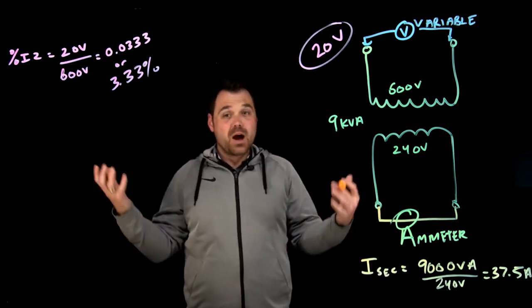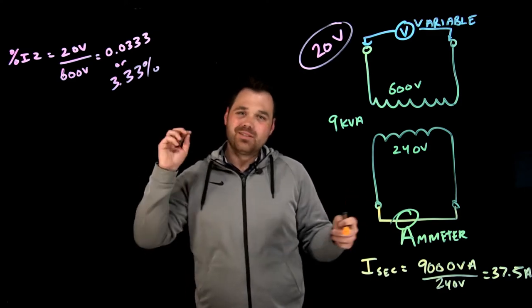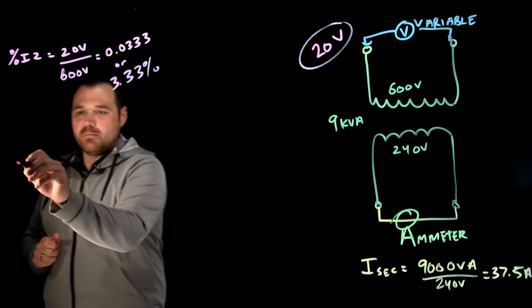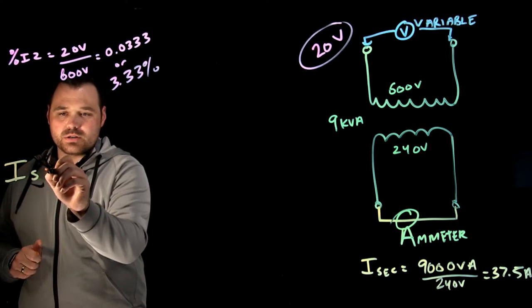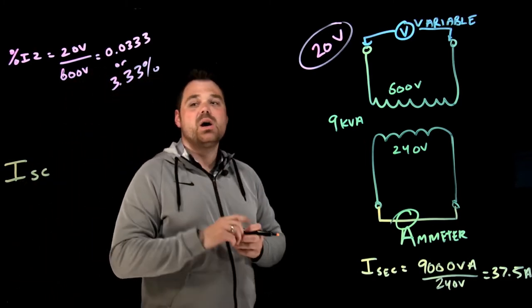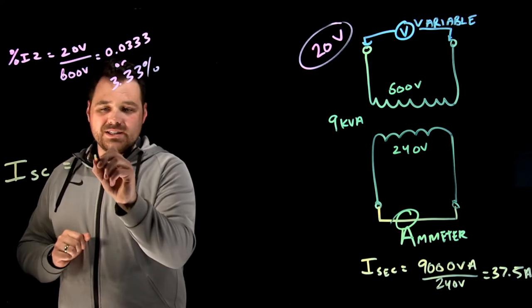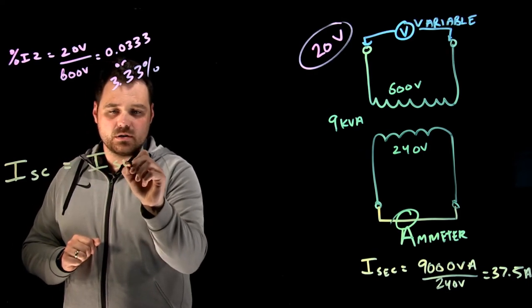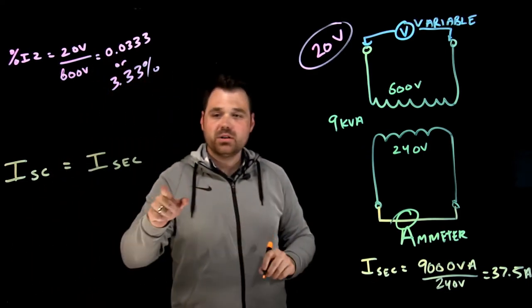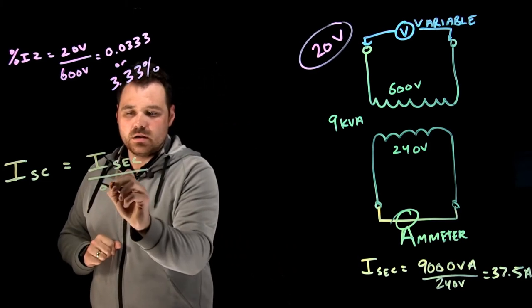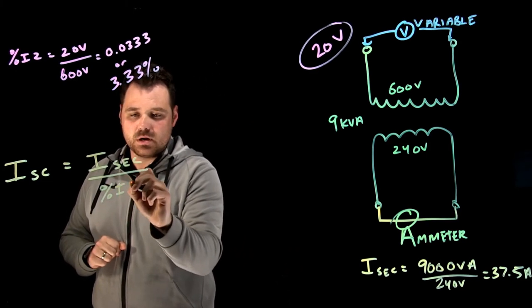Awesome. Now, what do I want to do with that number? Let's say I want to calculate my short circuit current. So what am I going to do? I'm going to take my rated secondary current, my rated current, and I'm going to divide it by my percent IZ.